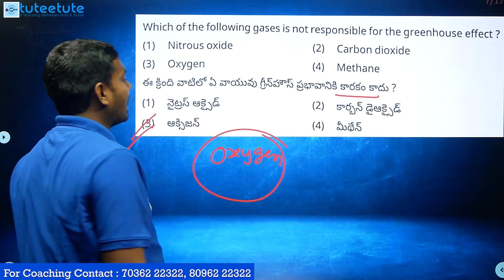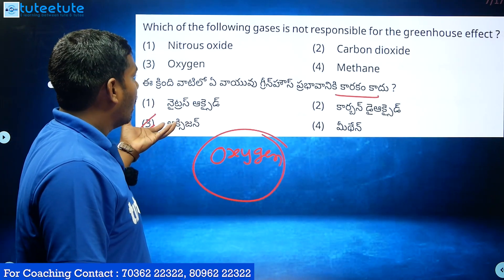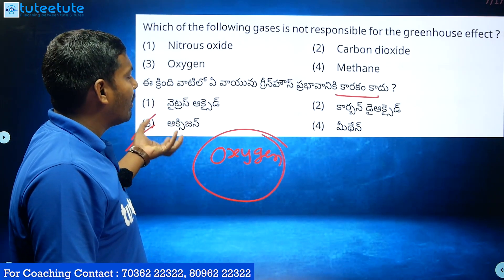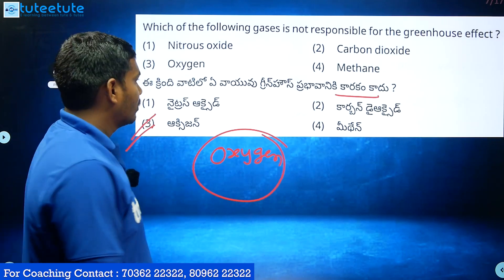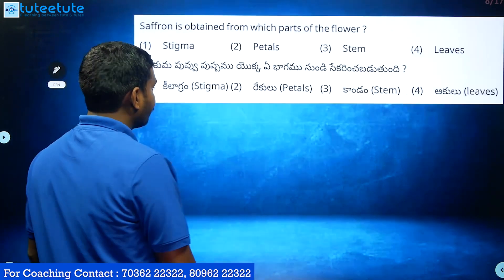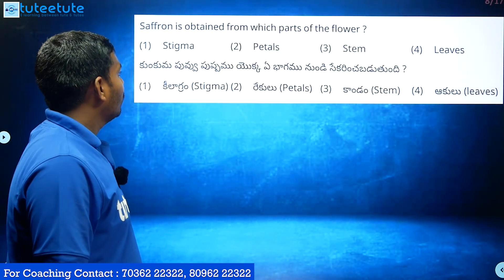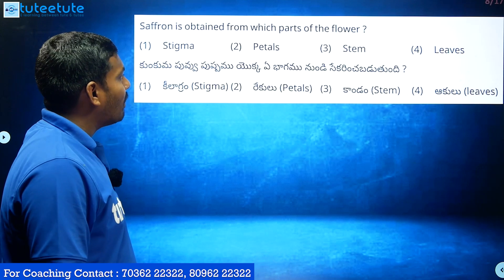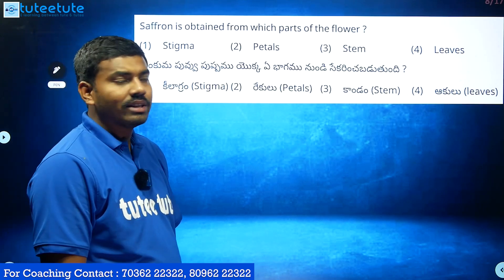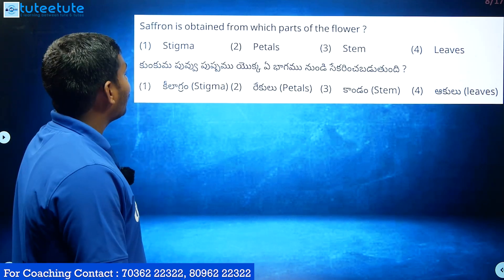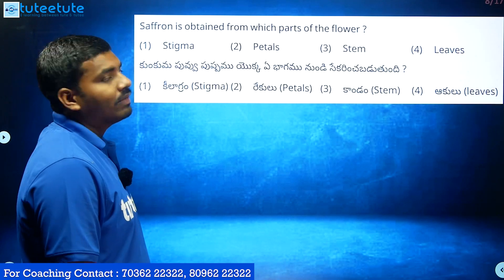It involves a lot of sulfur. Saffron is a very good thing. Saffron is obtained from which part of the flower?